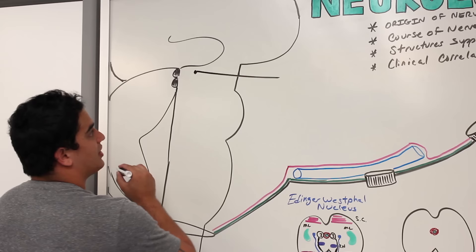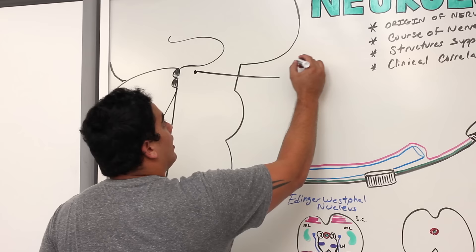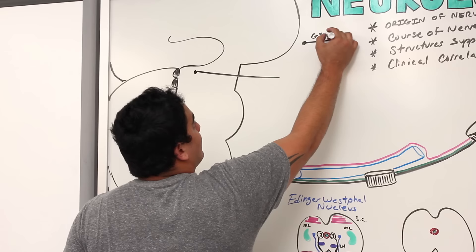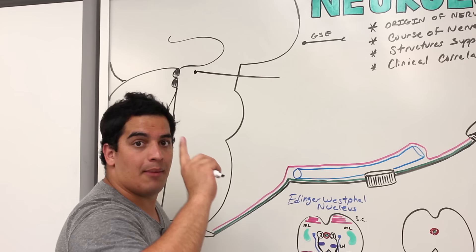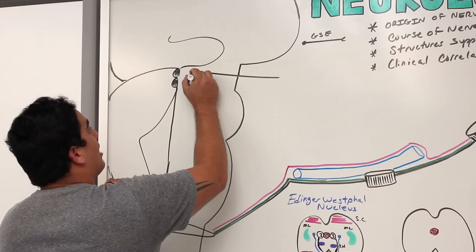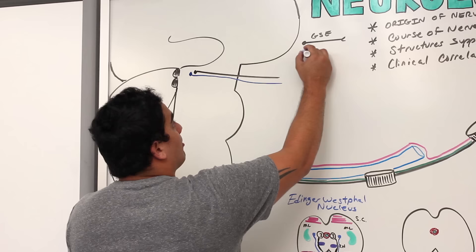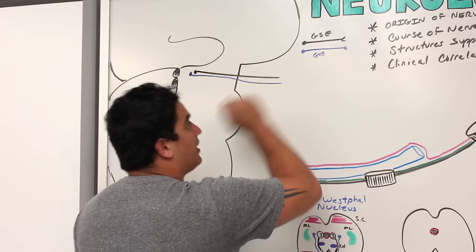The parasympathetic fibers moving with the oculomotor nerve are classified as GVE — general visceral efferent — fibers. Now, regarding the course: the vertebral arteries come up through the transverse foramina of the cervical vertebrae, converge to form the basilar artery, which then gives off the posterior cerebral arteries as part of the circle of Willis, as well as the superior cerebellar arteries.